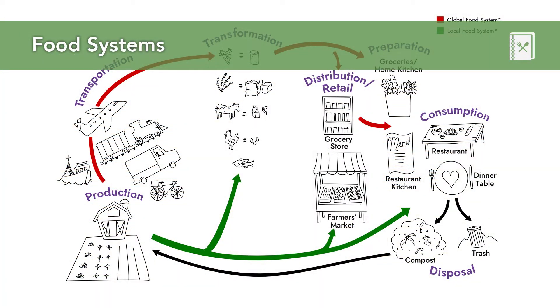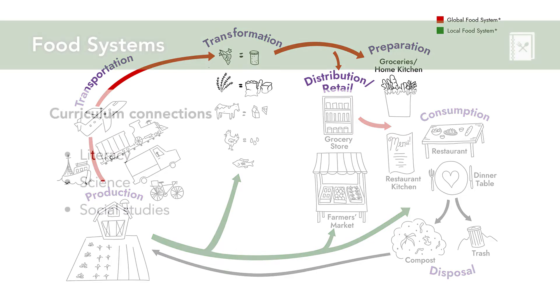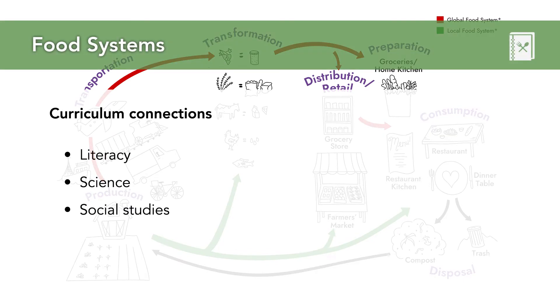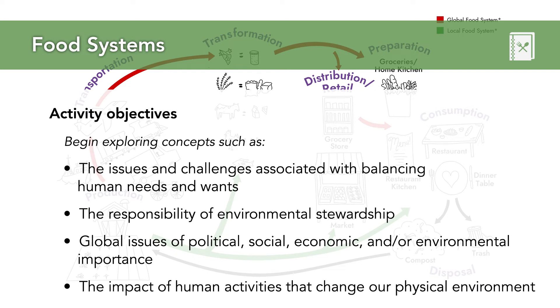At Growing Chefs, teaching food systems and understanding our place within them is at the core of all of our programming. Exploring the concept of food systems in the classroom is an incredibly important aspect of developing food literacy. Possible curriculum connections exist in literacy and science, but it's in social studies where food systems really align with the curriculum. From grade 4 to 8, students will begin exploring concepts such as issues and challenges associated with balancing human needs and wants with environmental stewardship, global issues of political, social, economic, and environmental importance, and the impact of human activities that change the physical environment.